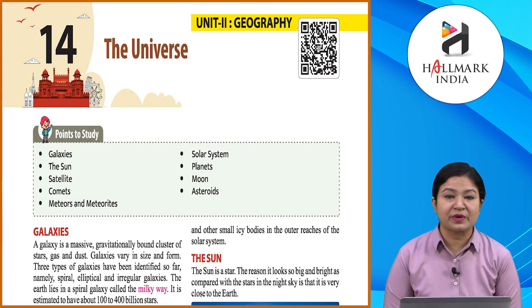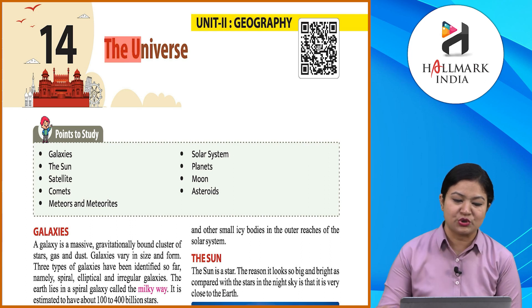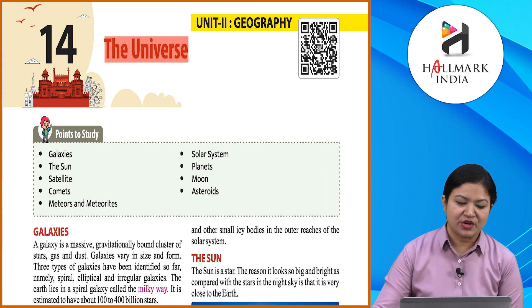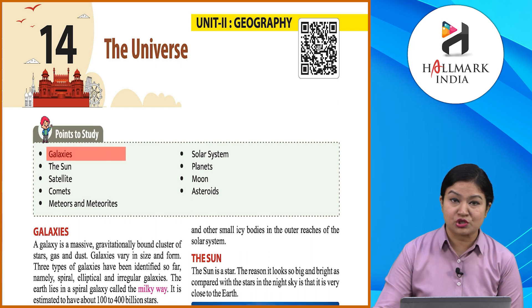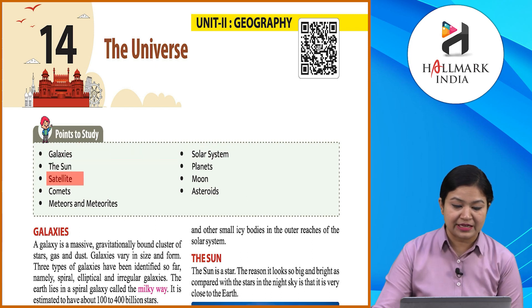Hello students, how are you all? I'm sure you all are doing really good. Let's begin with our next chapter, which is about geography: the universe. Points to study include galaxies, solar system, the Sun, planets, satellites, moon, comets, asteroids, meteors, and meteorites.